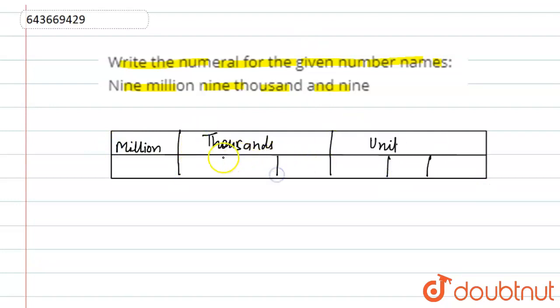Now this number is nine million. Nine thousand means zero zero nine. So we have nine million, nine thousand which is zero zero nine, and nine which is zero zero nine.